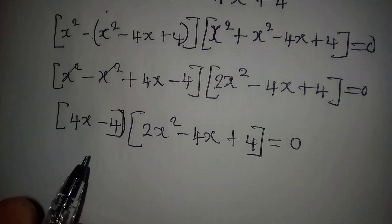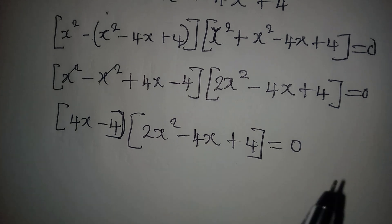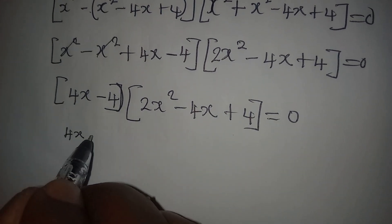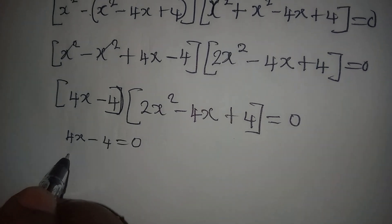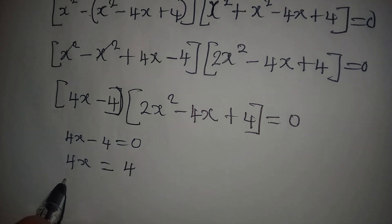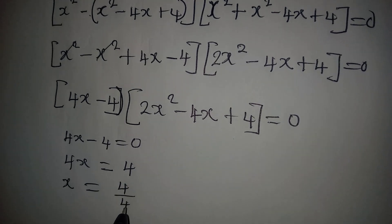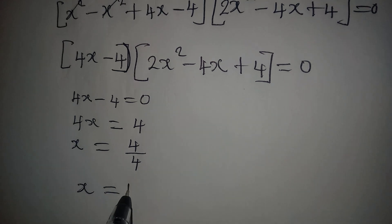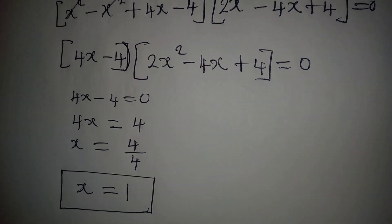Either the first factor equals 0 or the second factor equals 0. Working with the first: 4x minus 4 equals 0, meaning 4x equals 4, so x equals 4 over 4. The value of x from here is equal to 1. This is the first solution to the problem.